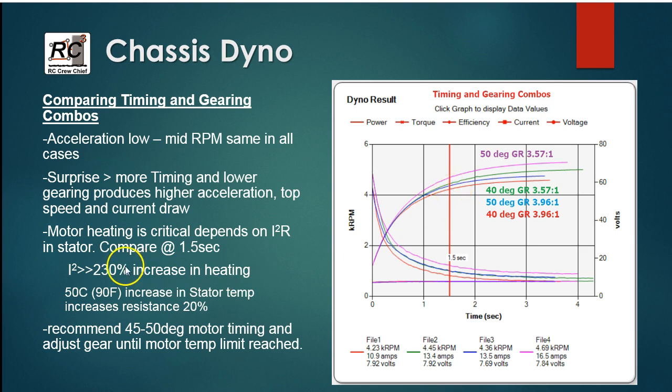230 percent is not an insignificant number. That's why you see, you know, temperatures starting to increase dramatically when you start increasing timing and also in lowering your gear ratio.